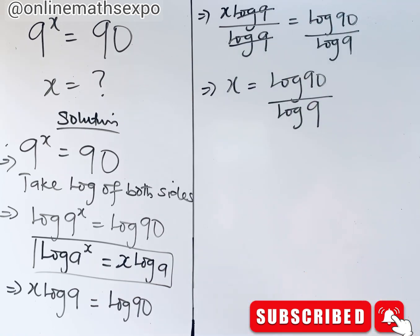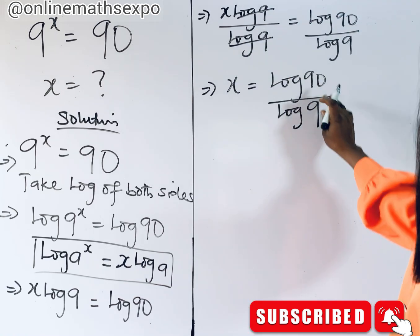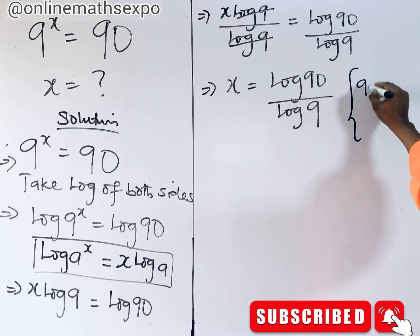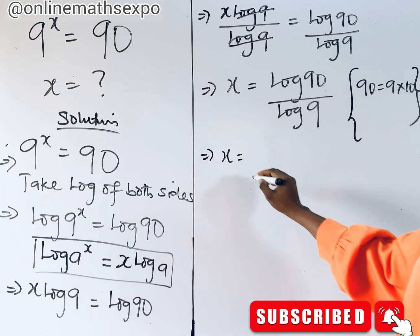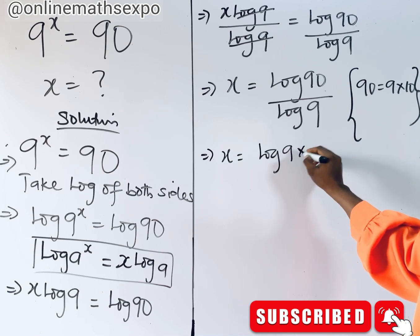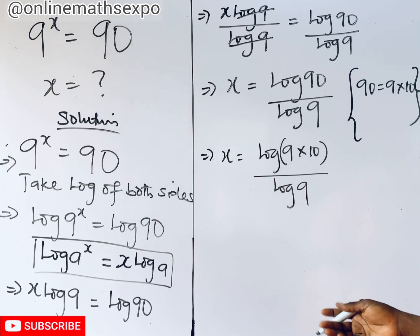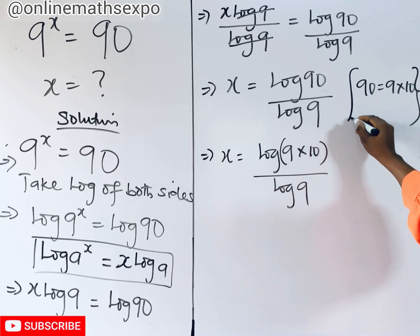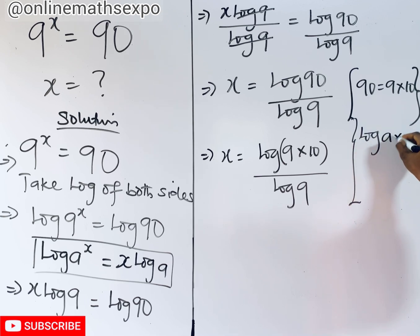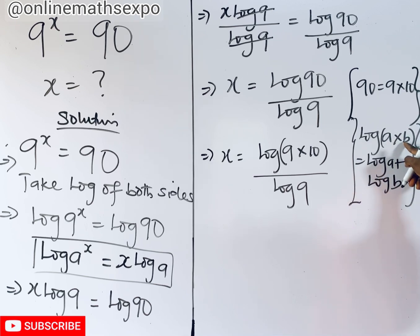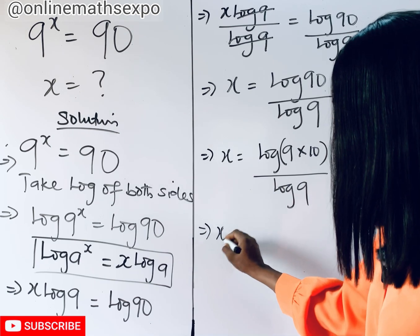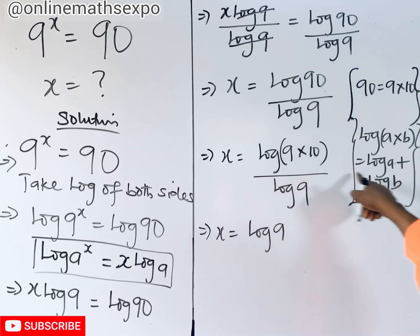Let me teach you how to simplify further. Just remember that 90 can be written as 9 times 10. So x equals log of (9 × 10) divided by log of 9. Now apply the logarithm product rule: log of a multiplied by b equals log a plus log b — the multiplication turns to addition. Applying this gives us x equals log 9 plus log 10, all divided by log 9.